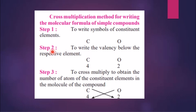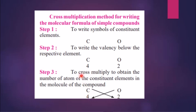Step two is to write the valency below the respective elements. Carbon's valency is four, so we write 4 below carbon. Oxygen's valency is two, so we write 2 below oxygen. Step three is to cross multiply between both elements — the valency of carbon (4) goes to oxygen, and the valency of oxygen (2) goes to carbon.